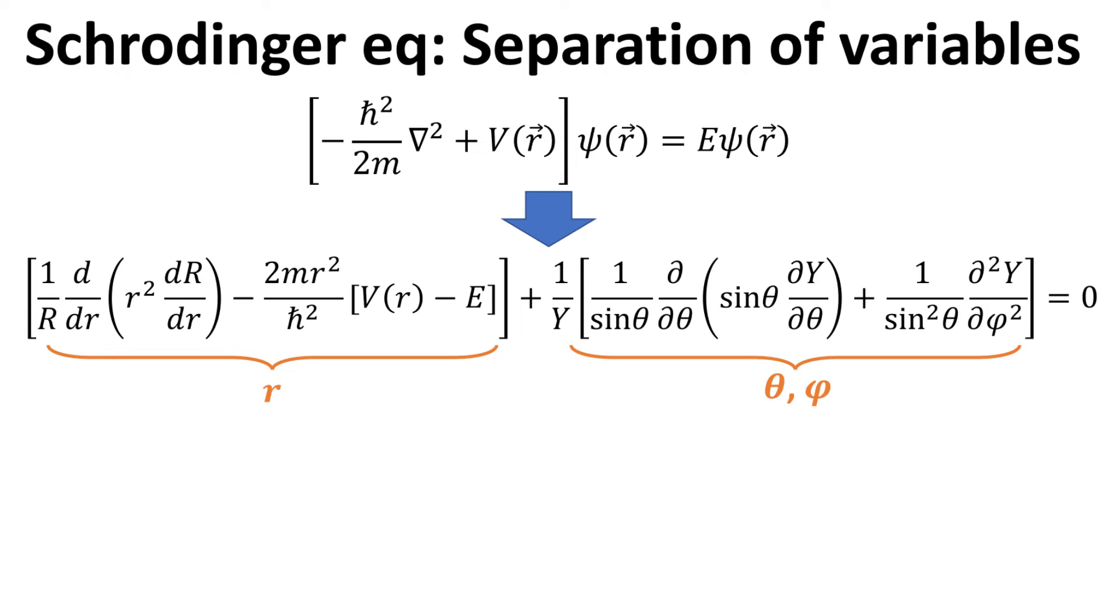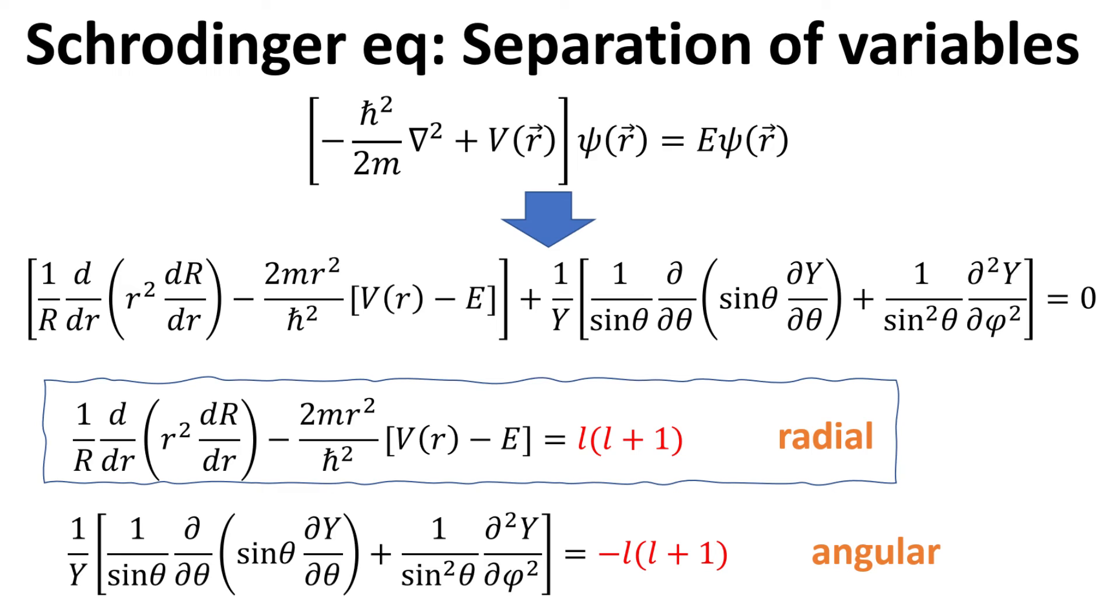We see that the expressions within the first square bracket depends only on the coordinate r, while the expressions in the second square bracket depends on theta and phi only. Hence, these two expressions must each be a constant for the equality to be satisfied. We shall let the constant be L multiply by L plus 1, for reasons that will become apparent later.